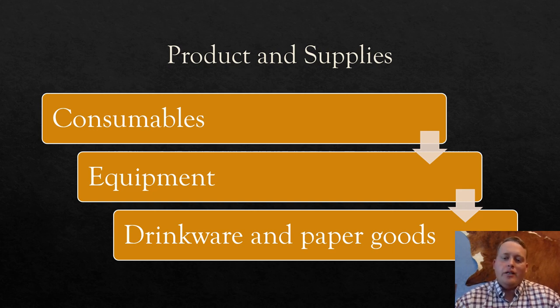Then you need to look at equipment. You need blenders, coffee grinders, coffee makers, espresso machines, refrigerator, air conditioner, tables.